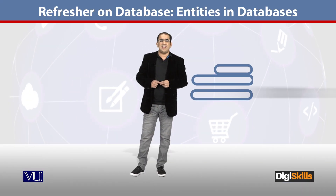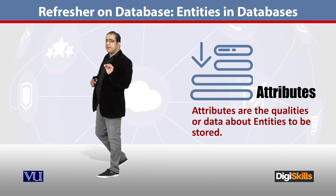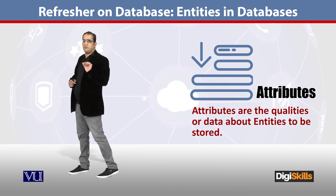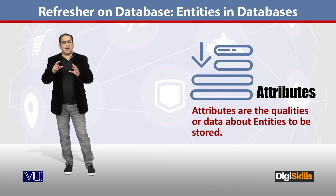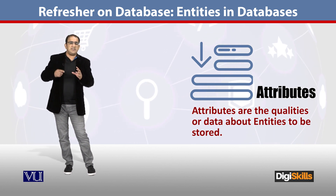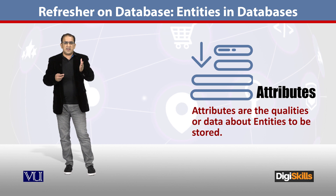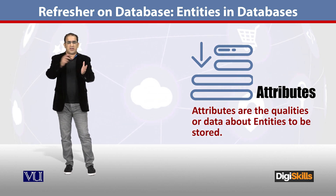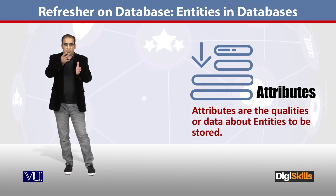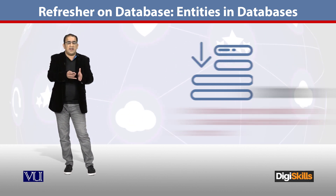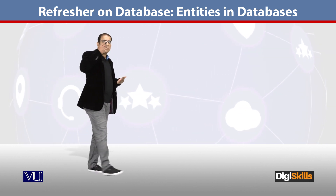The next thing is attributes. This is very simple. If the entity is something about a scenario or requirement which we store, then the entity is the thing that we store, and the attribute is also the thing that we store — it describes the entity.